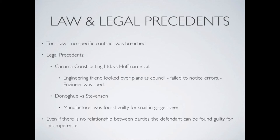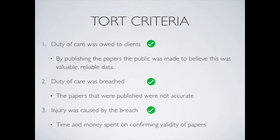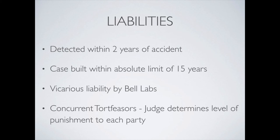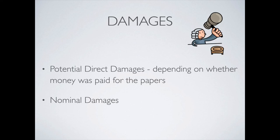Looking at the criteria for the tort law case, we can see that all three tests were passed: a duty of care was owed to the clients, the duty of care was breached, and injury in the terms of time and money spent was caused by the breach. In a scenario where all parties are engineers rather than scientists, there would most likely be a vicarious liability by Bell Labs, and since there are concurrent tortfeasors, the judge should determine the level of punishment to each party. There would be potential direct damages, depending on whether money was paid for the papers, as well as nominal damages, and so the scientific community would win this case.